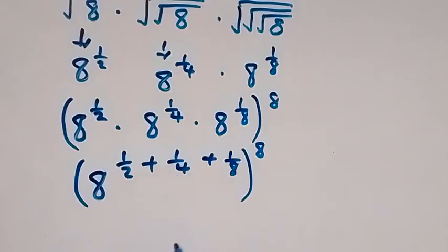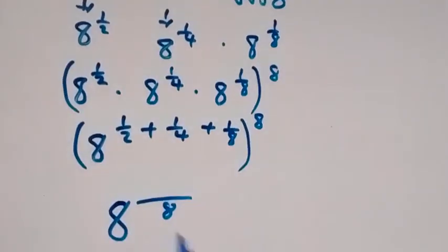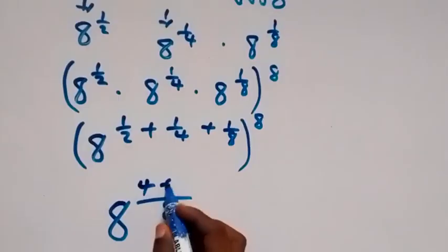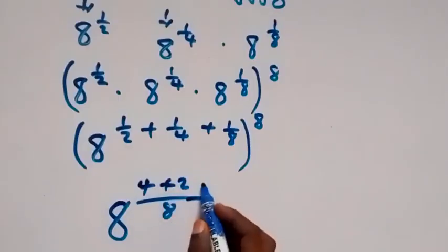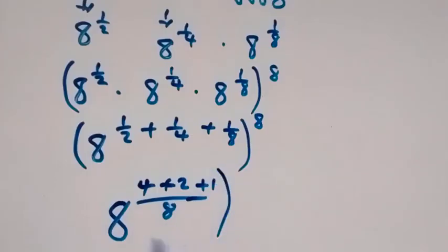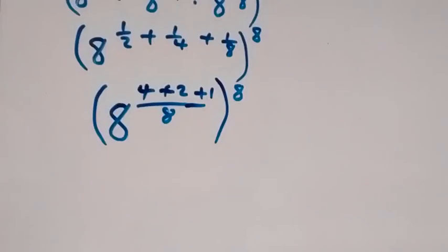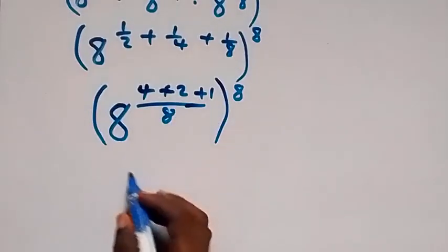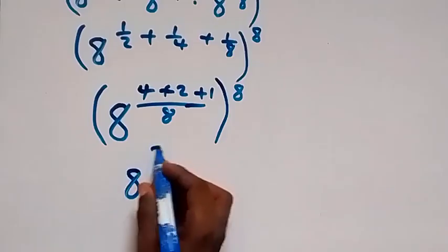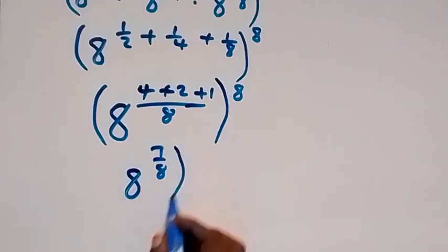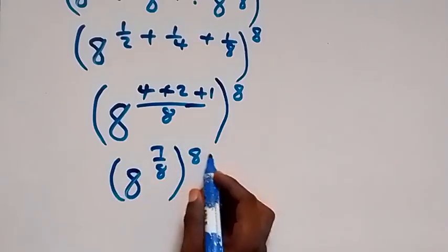This becomes eight raised to power one over two plus one over four plus one over eight, which is being raised to power eight. From here the LCM is eight. Two goes into eight four times — four times one is four. Four goes into eight two times — two times one is two. Then plus one. When we sum: four plus two plus one equals seven. We have eight raised to power seven over eight, all raised to power eight.